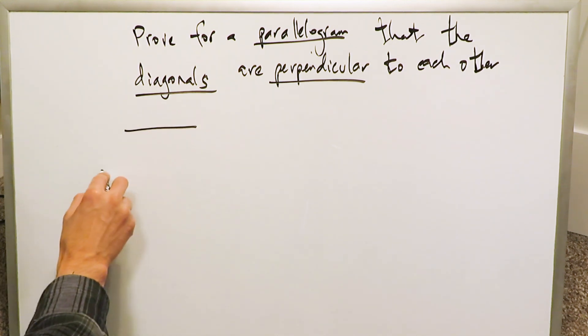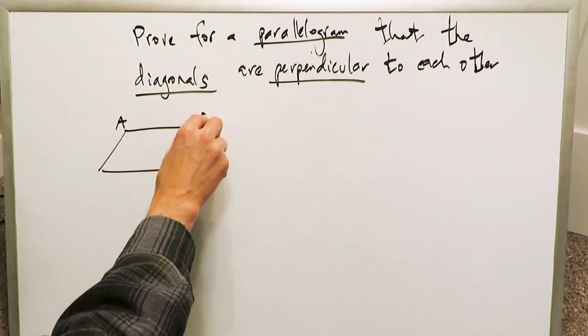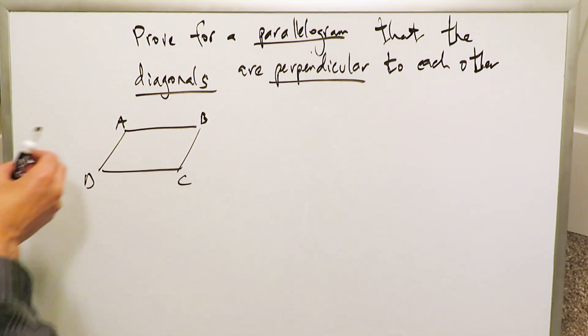A parallelogram is a polygon made of two pairs of parallel sides. The opposite sides are parallel to each other. You have AB parallel to DC. BC is parallel to AD.